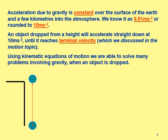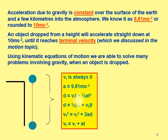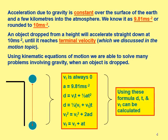An object dropped from a height will accelerate straight down at 10 meters per second squared until it reaches terminal velocity, which we've already discussed previously in the unit. Using the kinematic equations we've already learned, we are able to solve many problems that involve gravity because we have an acceleration of 10 which we can use. Here's an example of a ball falling off a table — the initial velocity is always zero when it falls off, and the acceleration is 9.81 meters per second squared downward.